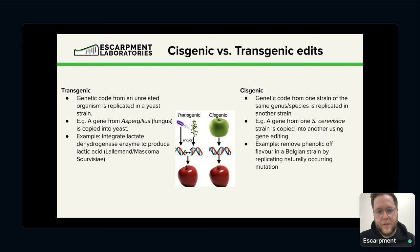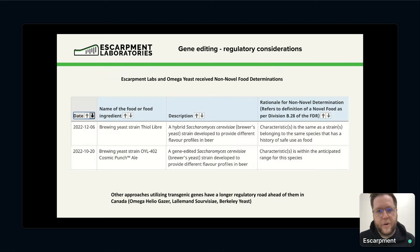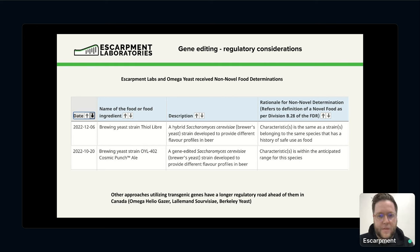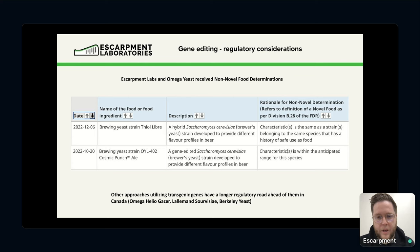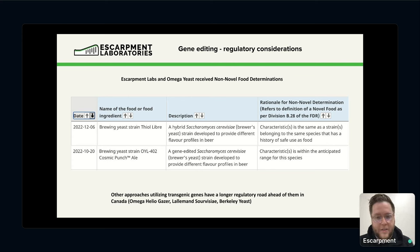Here in Canada we have a lot more of the cisgenic type on the market, whereas in the US there's both. There are some regulatory frameworks around these. We've been through the process in Canada, where we have a process to get these kinds of newly developed yeast strains approved. One example is called the non-novel food determination. The ThiAlibré and Cosmic Puncher from Omega Yeast are two examples of yeast that have been through that process. It is important to have a regulatory screening process to make sure that any newly developed yeast strains with these technologies have the due diligence done to ensure they're safe — especially when you're getting into transgenic edits, you have to make sure that whatever new function is being added to the yeast is going to ensure it has the same safety profile as the original strain.